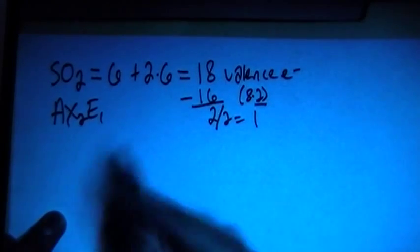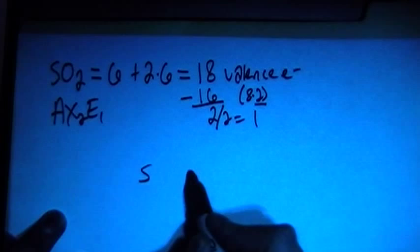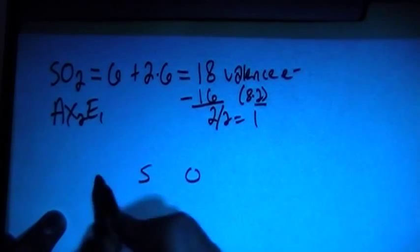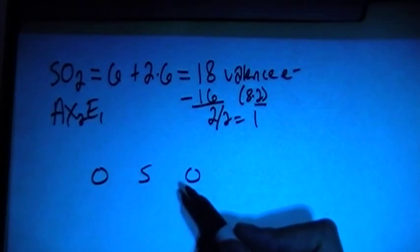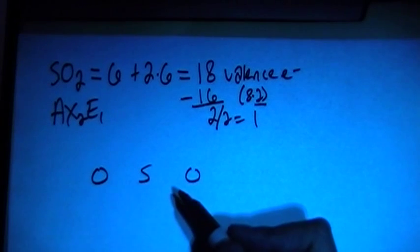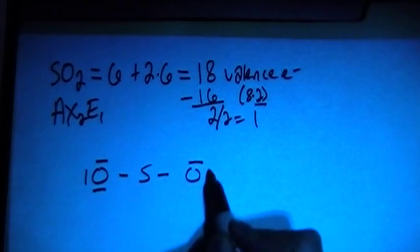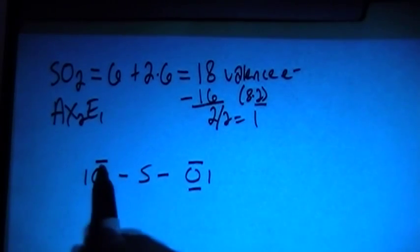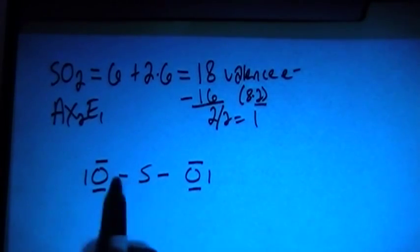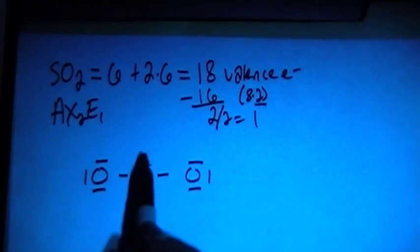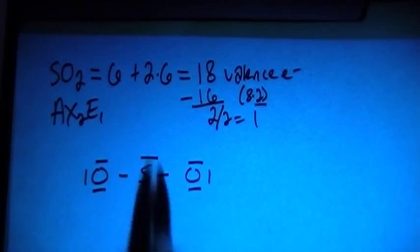S is going to be the central atom. So it's S, and then it's got the 2 oxygens, and we can go ahead and connect them with single bonds, and then fill out the oxygens. So now there's 8 electrons on each oxygen, and that's going to give us 16, and then you have to put the extra lone pair on the sulfur.